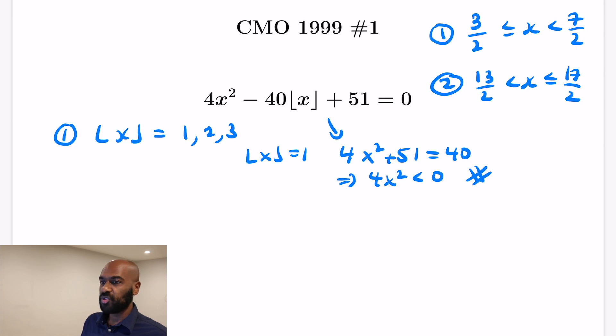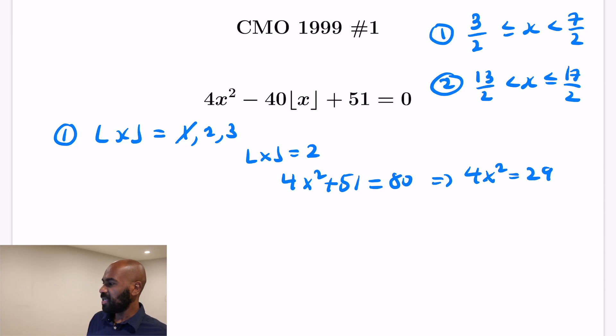So now let's move on to what happens with the floor of x being 2. We see that these situations are going to be particular, we need to check things. So if the floor of x is 2, our equation becomes 4x² + 51 = 80. Rearranging, we get 4x² is going to be the difference of 80 and 51, which is 29. And so x is √29/2.